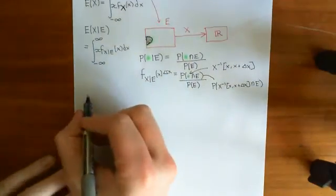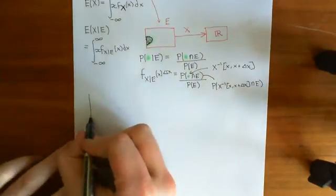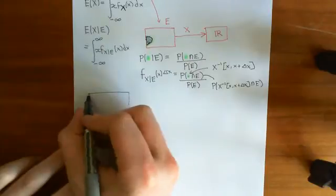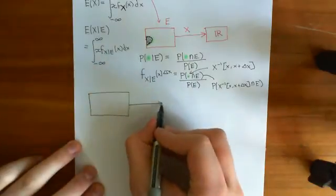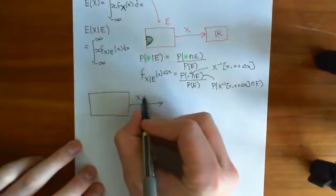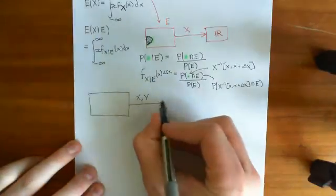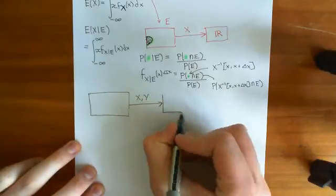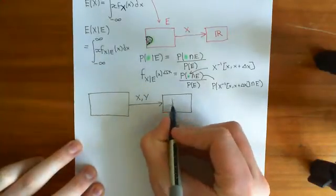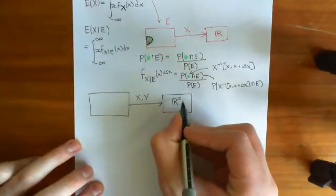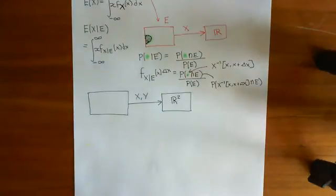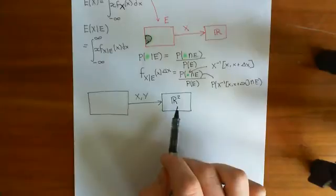What we're going to imagine having is an abstract probability space with a joint random variable defined on it. We're going to have a joint random variable (X, Y) defined on it, which maps you onto an ordered pair of real numbers instead of just a single real number — so it maps you onto points in R².